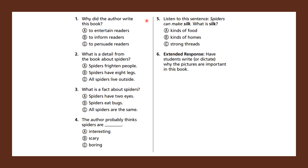Number five: listen to this sentence — 'spiders can make silk.' What is silk? Is it food? Is it a kind of home? Or is it strong threads? Think about the picture of the spider making the web. Was that the spider's home or its food? It definitely wasn't the spider's food because spiders don't eat silk — spiders eat bugs. So was it their home or a strong thread? The answer is C: strong thread.